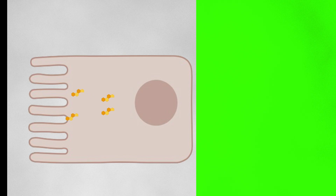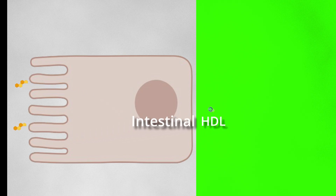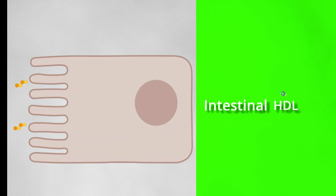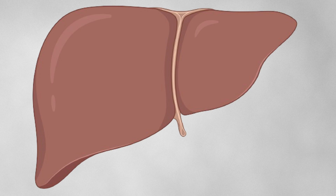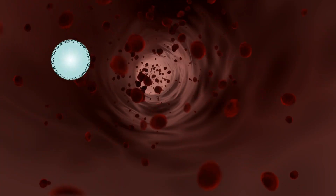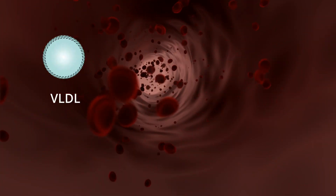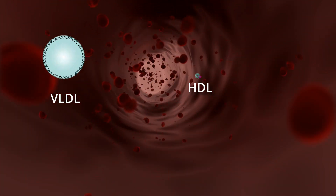Free cholesterol is either excreted back into the intestinal lumen or into the bloodstream as HDL. The liver secretes VLDL and nascent HDL.